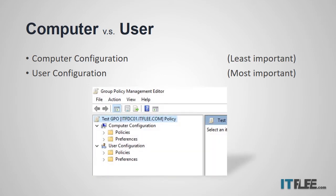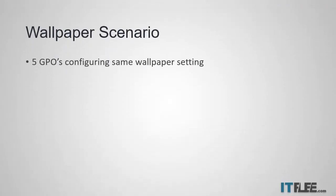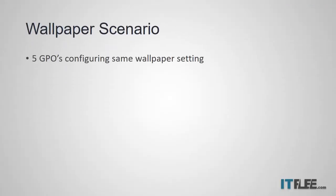Here's a picture showing a GPO in the group policy management editor. You can see at the top you have the computer configuration and the user configuration — hopefully that helps you relate to what we're talking about. Now let's take a wallpaper scenario. Let's say we have five GPOs that are all configuring the same wallpaper setting, and it's different for each GPO. Which GPO is going to win?